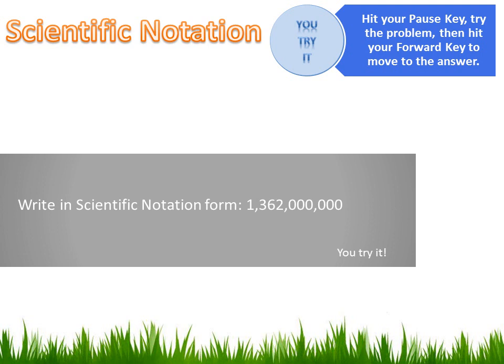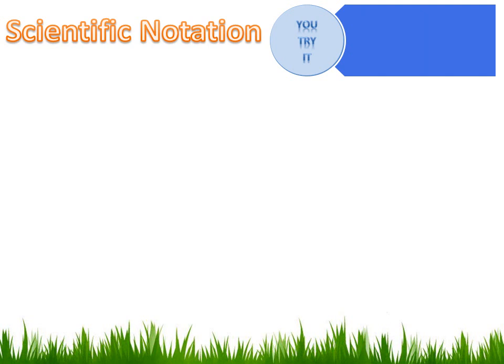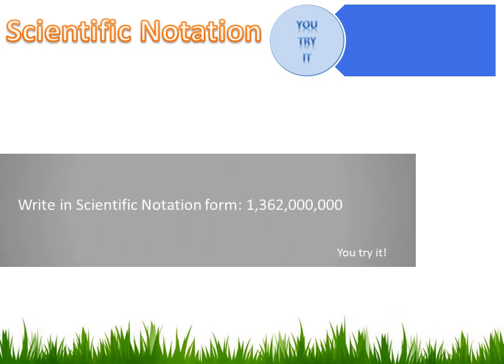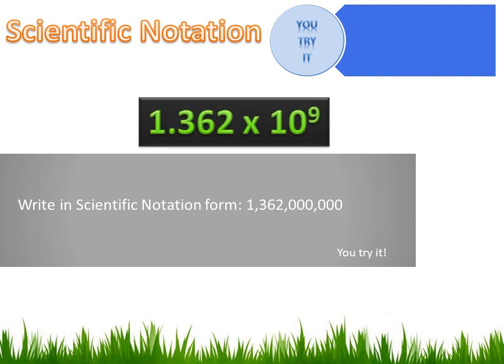You try this one. Hit your pause button. Try the problem. And then hit your forward key to move on to the answer. Alright, I want to write this big number in scientific notation. And that means I need to get my decimal point right there, right after the 1. So, it reads 1.362 times 10 to some power. What power is that? Well, I've got 1, 2, 3, 4, 5, 6, 7, 8, 9 places I want to move it. So, the answer would be 1.362 times 10 to the ninth.